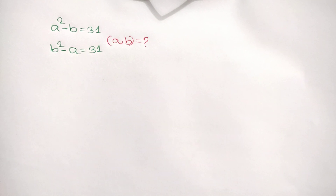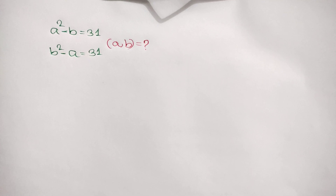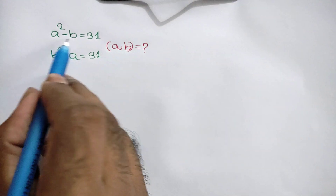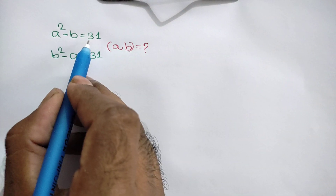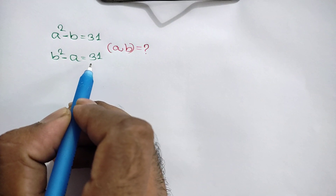Hi everyone. In this video I am going to show how to find the value of A and B, where A squared minus B is equal to 31, and B squared minus A is equal to 31.